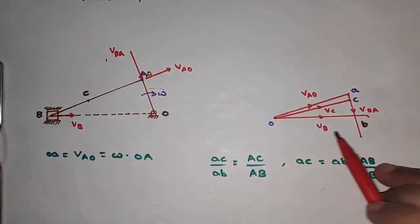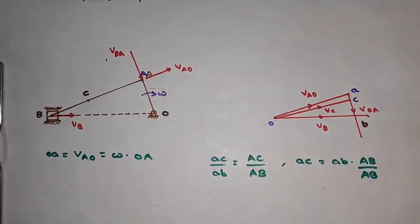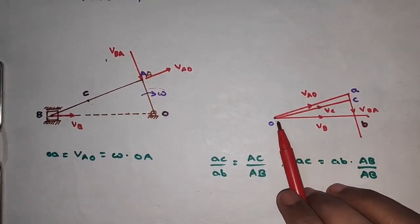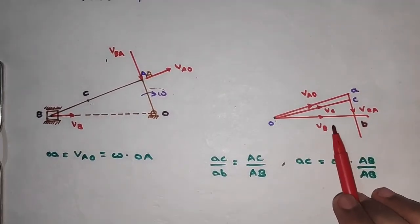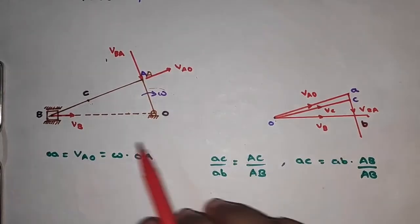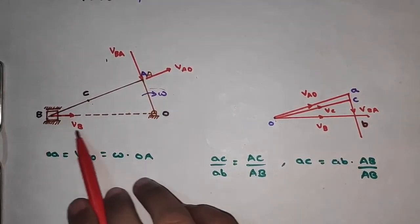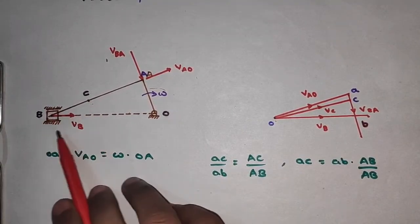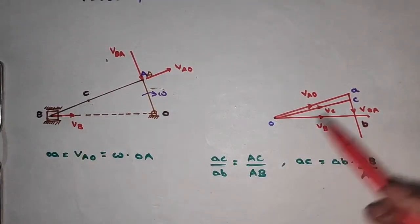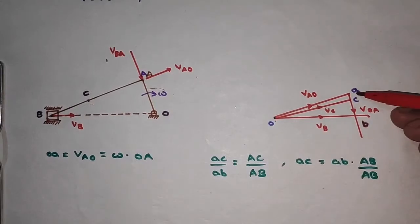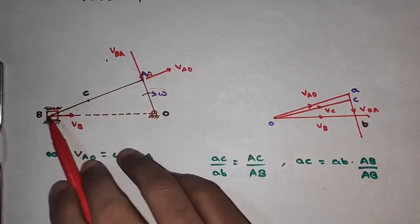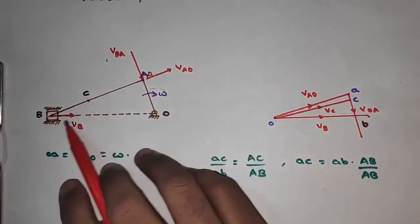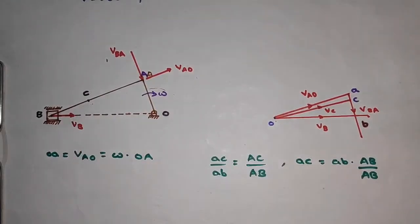We now have the velocity triangle. By measuring the length OB we can determine VB, the linear velocity of the slider. Measuring AB gives the velocity component of the connecting rod, from which we can determine the angular velocity.